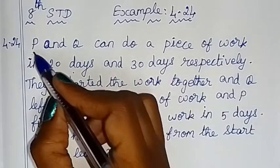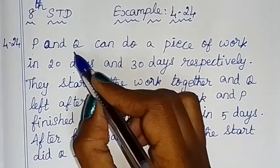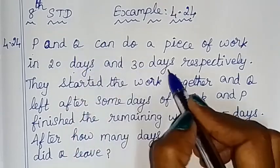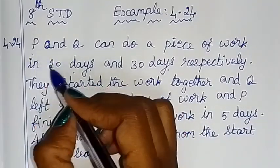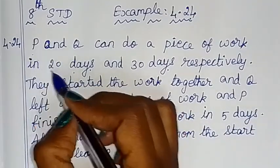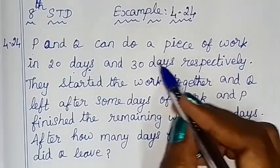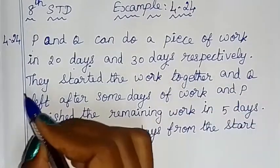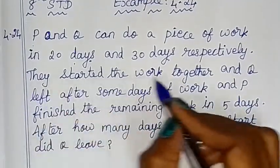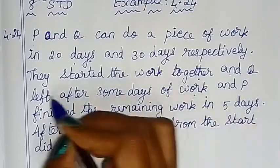So, how do we do this? If you have a work, P will complete it in 20 days, and Q will complete it in 30 days. P is faster at 20 days, and Q is slower at 30 days. They started the work together, and Q left after some days of work.